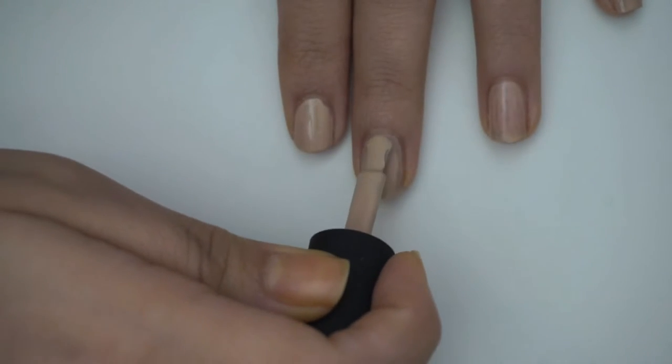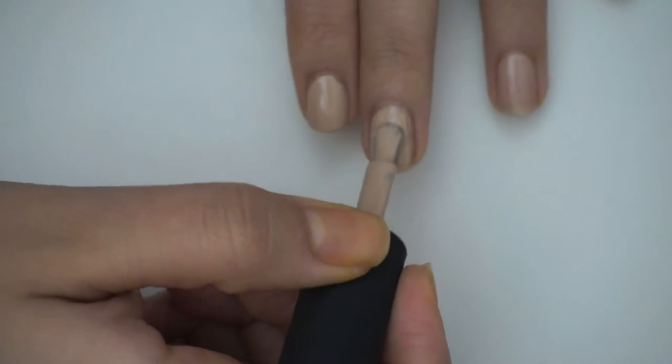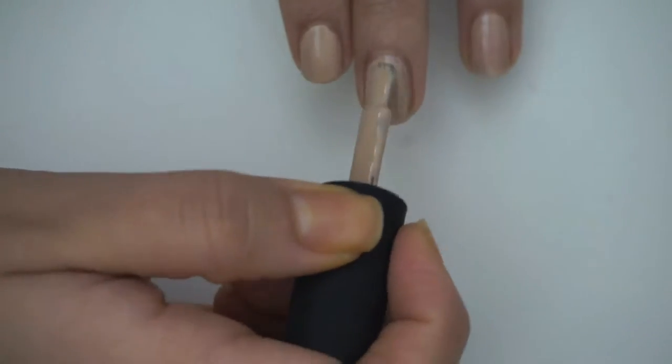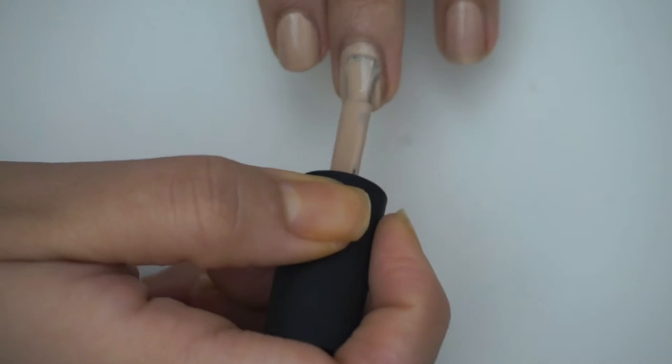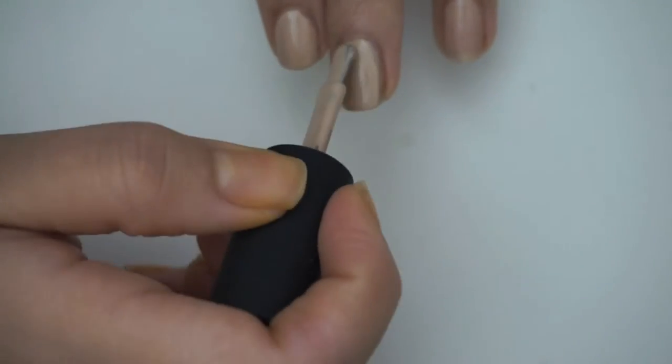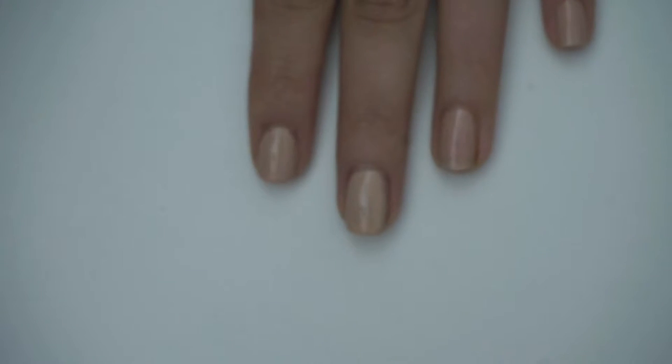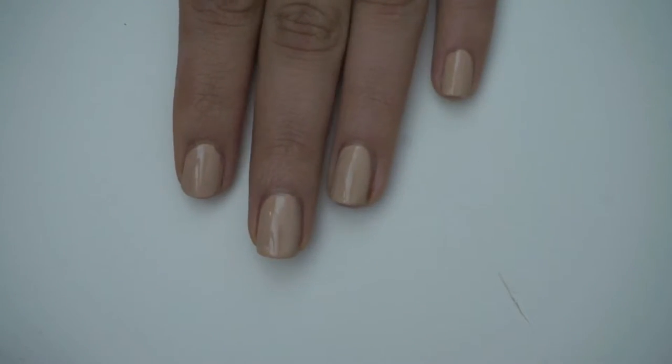But if you don't want to have any streaks or any discoloration, then I suggest that you do a second coat. It just looks better and darker, the color will show more. And this is Snickerdoodle.